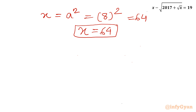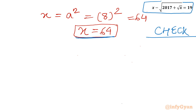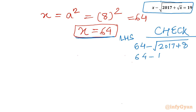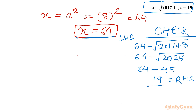Let's verify this. Checking x equal to 64 in the original equation: 64 minus square root of (2017 plus square root 64) equals 64 minus square root of (2017 plus 8) equals 64 minus square root 2025 equals 64 minus 45 equals 19, which is our RHS. That means x equal to 64 is the true solution.